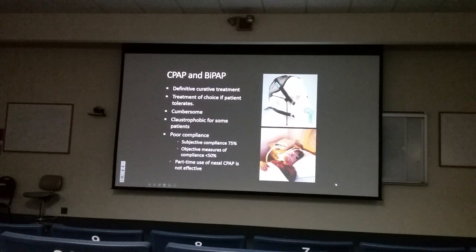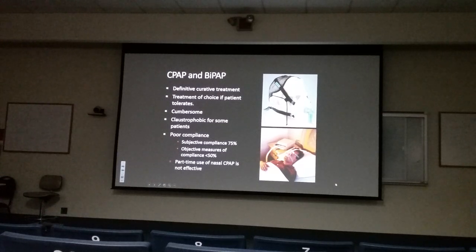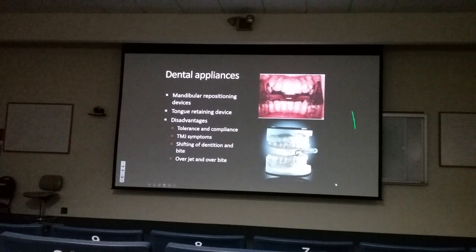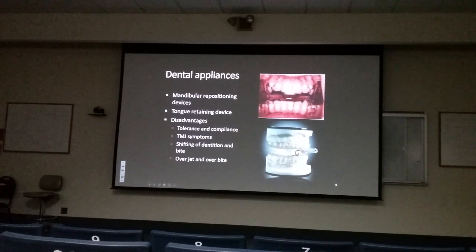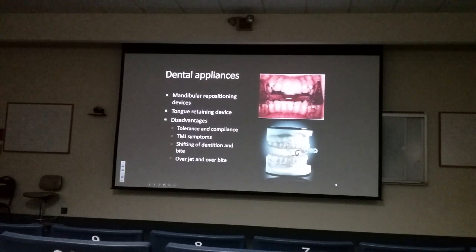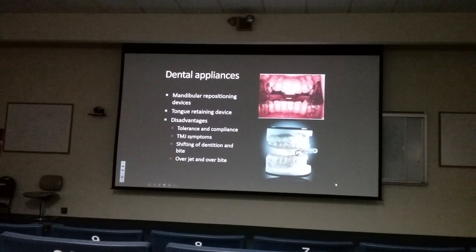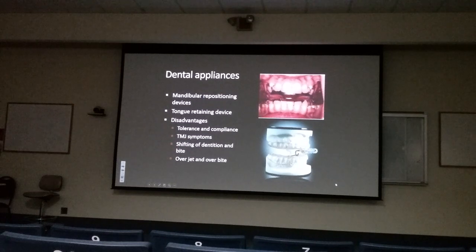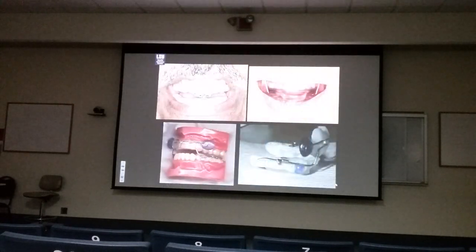New recommendations allow offering dental appliances as an alternative if patients don't think they'll use CPAP. About 80–90% of dental appliances work by positioning the mandible forward, preventing the tongue from falling back. Some hold the tongue forward directly. These can be titrated based on response. There are about 60 devices on the market, with two or three being most popular.